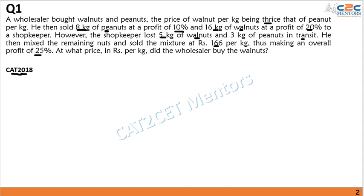There are two transactions happening here: the wholesaler selling to the shopkeeper, and the shopkeeper selling to the customer. We need to make equations for both transactions. CAT 2018 questions were not that difficult — they were lengthy, shortcuts were not applicable, and calculations were on the tougher side. But the concept involved was still the same as covered in the basic videos.